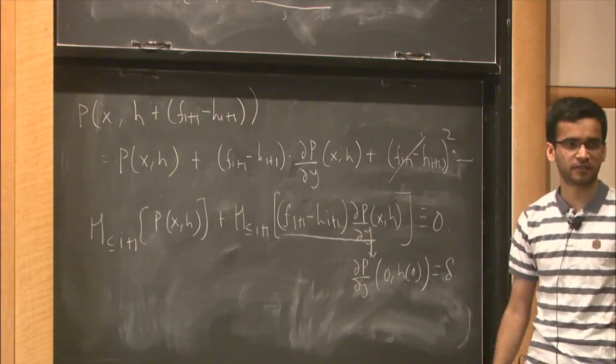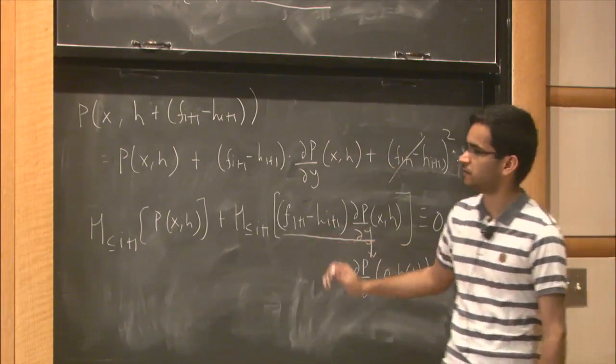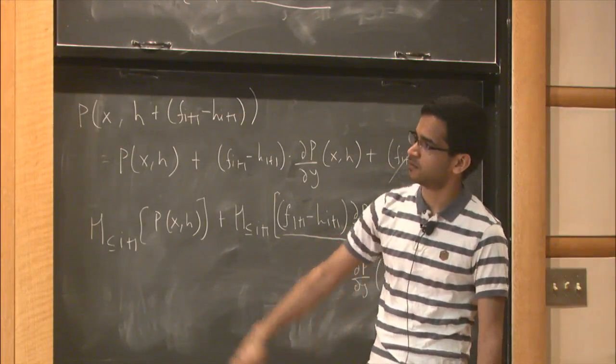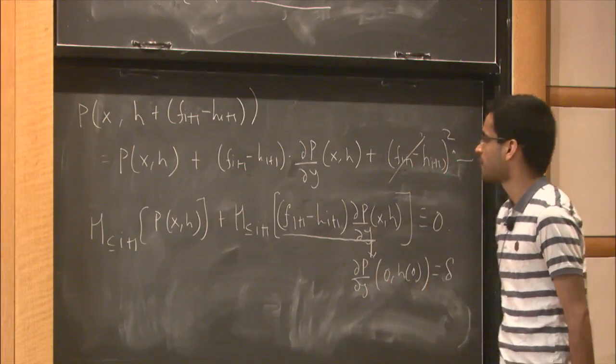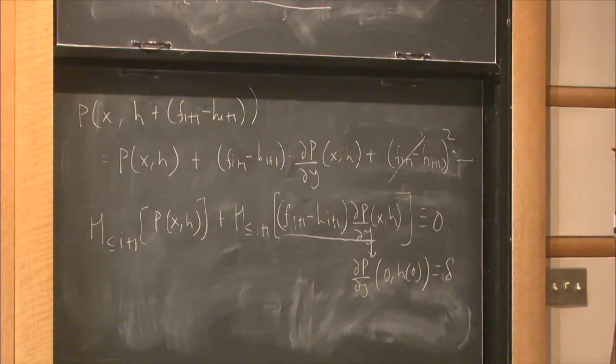We are only interested in monomials of degree at most i+1. The higher-order terms don't contribute. Every monomial of the correction term has degree i+1. The only way to get something of degree at most i+1 is to pick the constant term from ∂P/∂y. That constant term is ∂P/∂y evaluated at zero, which equals delta. So we get our recurrence.